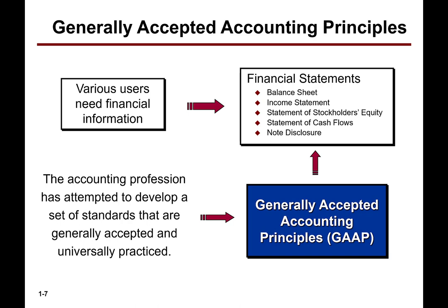As we mentioned last time, we have a set of financial statements that we're going to be studying in this class. The primary ones we'll spend time with up front are the balance sheet and the income statement. We'll also look at something called the statement of retained earnings, which is basically akin to the statement of stockholders' equity. Towards the end of the class, we'll talk about the statement of cash flows.